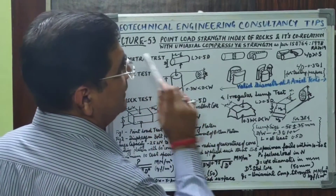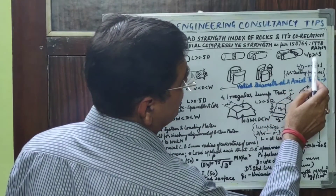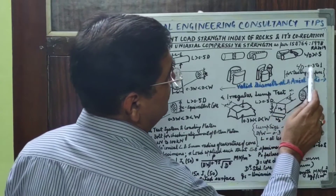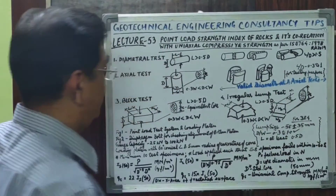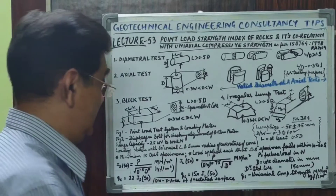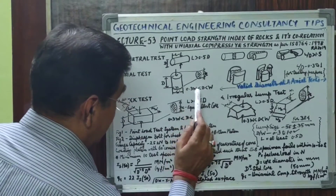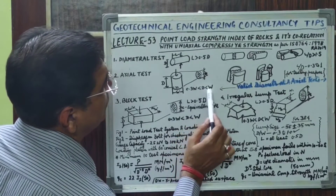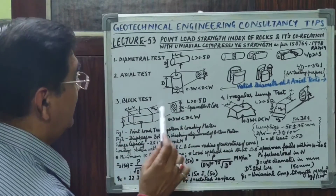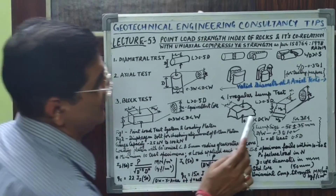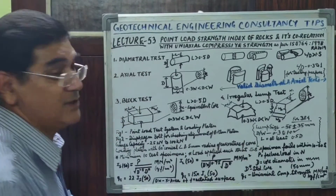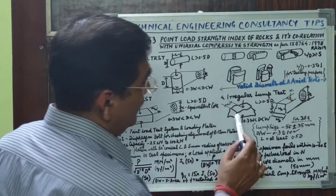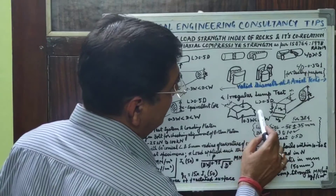In the diametral test, the L/D ratio should be greater than 1.5. In the axial test, the L/D ratio should be between 0.3 and 1. Also in the axial test, D should be between 0.3W and W. The same dimensional requirements apply for the block test and the irregular lump test as specified in this Indian Standard code.